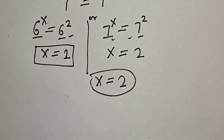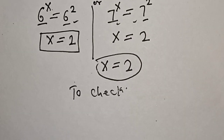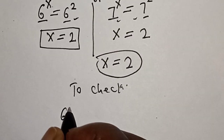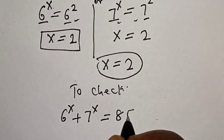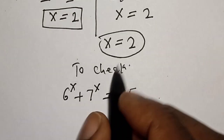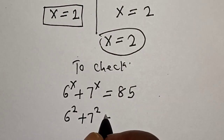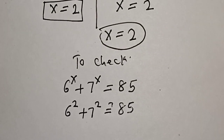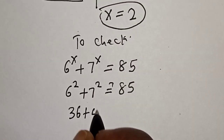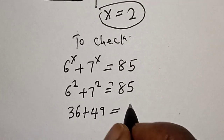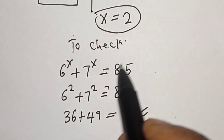Let's check to confirm if our answer is right. We have the given equation: 6 raised to power s plus 7 raised to power s is equal to 85. At s equal to 2, we have 6 raised to power 2 plus 7 raised to power 2, which is 36 plus 49, equal to 85. This satisfies the given equation, so s is equal to 2.